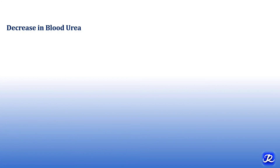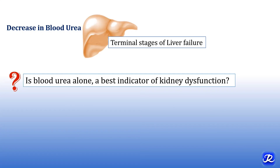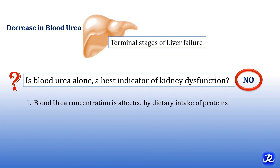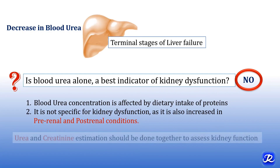Can there be a decrease in blood urea level? Yes, but very rarely, in terminal stages of liver failure. An important question: is blood urea alone the best indicator of kidney dysfunction? Blood urea concentration is affected by dietary protein intake, and it is not specific for kidney dysfunction as it is also increased in pre-renal and post-renal conditions. That's why blood urea alone cannot accurately assess kidney dysfunction, and urea and creatinine estimation should be done together to assess kidney function.